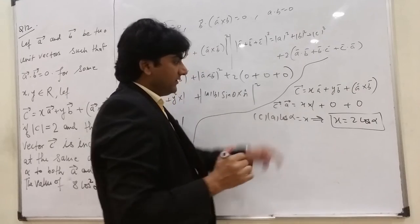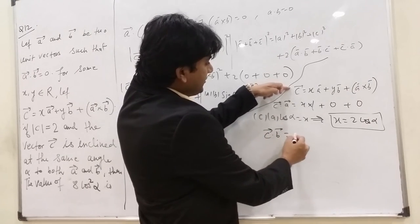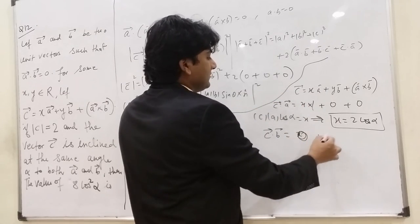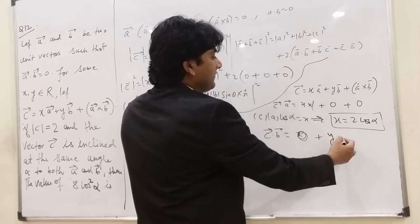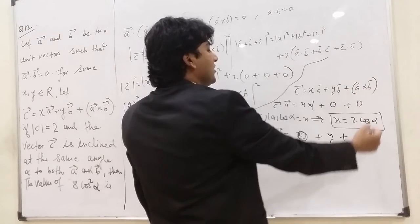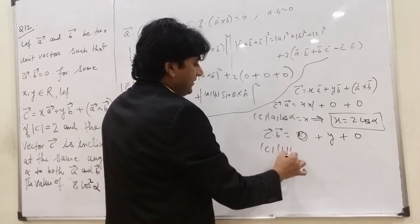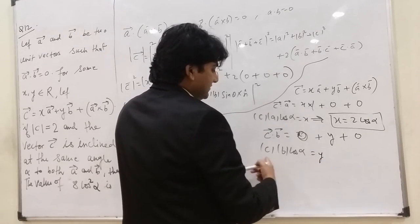Similarly, apply both sides dot B. So this would be C dot B. This is x A dot B that is 0. Now y B dot B. B dot B is mod B square, so B is 1, so only y. A cross B dot B that is 0. And this is mod C, mod B. Angle between B and C is also alpha, so cos alpha equals y.